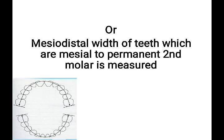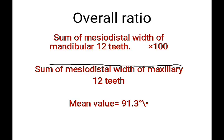For the overall ratio, the formula is: sum of mesodistal width of 12 mandibular teeth divided by the sum of mesodistal width of 12 maxillary teeth, multiplied by 100. The normal value obtained is 91.3 percent.